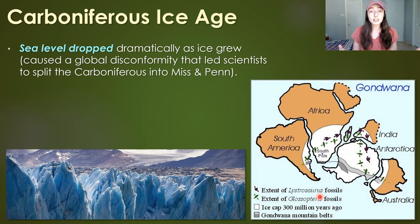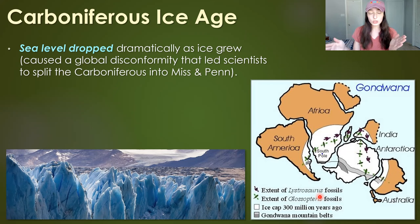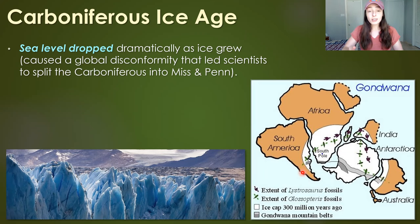Due to this ice age, sea level dropped, as it does when ice grows — the water taken up into ice is no longer in the ocean. Because of sea level drop, shallow seas that had transgressed onto continental masses were regressing; their basin margins were shifting seaward because there wasn't enough water to have them so far inland. This caused a major global disconformity — an erosional surface in the rock record representing a period of non-deposition.